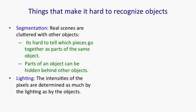Another thing that makes it very hard to recognize objects is that the intensity of a pixel is determined as much by the lighting as it is by the nature of the object. So, for example, a black surface in bright light will give you much more intense pixels than a white surface in very gloomy light.